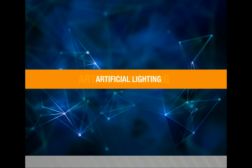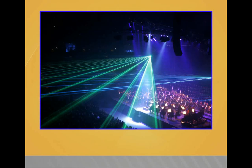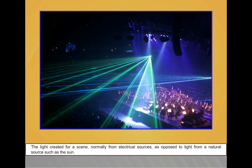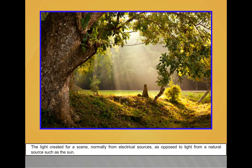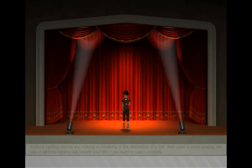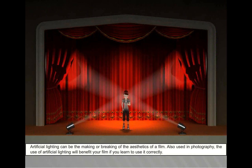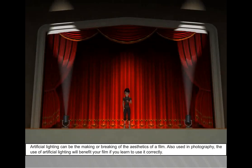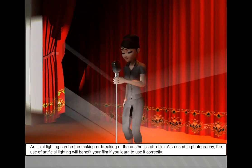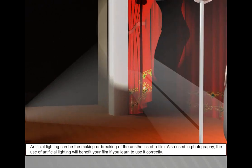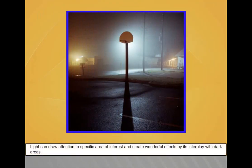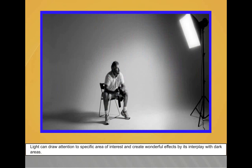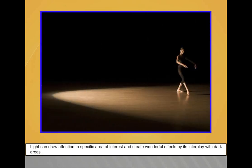Artificial lighting refers to light created for a scene, normally from electrical sources, as opposed to light from a natural source such as the sun. Artificial lighting can make or break the aesthetic of a film. The use of artificial lighting will benefit your film if you learn to use it correctly. Light can draw attention to specific areas of interest and create wonderful effects through its interplay with dark areas.